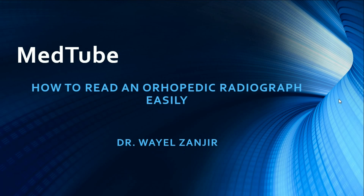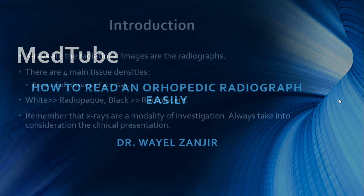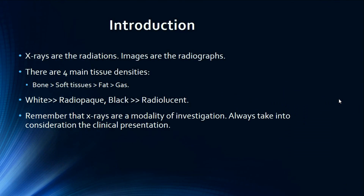Bismillah ar-Rahman ar-Rahim. Hello everyone and welcome to MedTube channel again. Today's topic is about how to read an orthopedic radiograph easily. As an introduction, as in the previous videos, X-rays are the radiations whereas the images that we see are the radiographs. We have four main tissue densities, with bone being the densest and appearing as radio-opaque, which is white, and gas being radiolucent, which appears black.